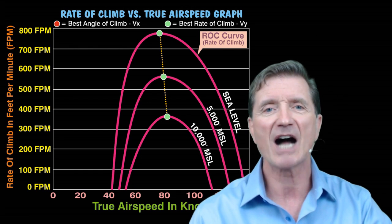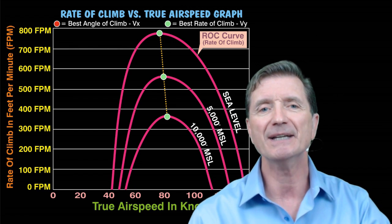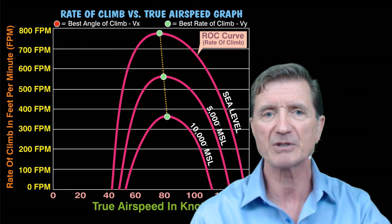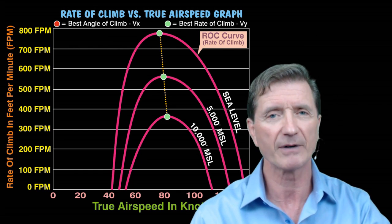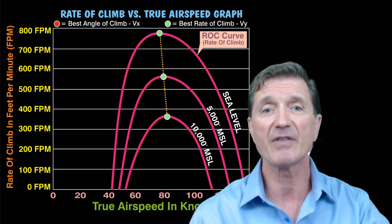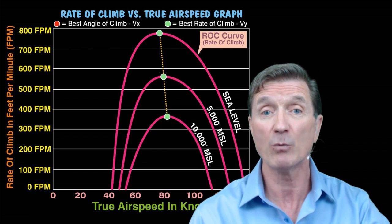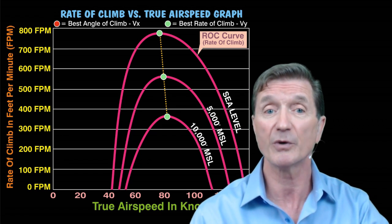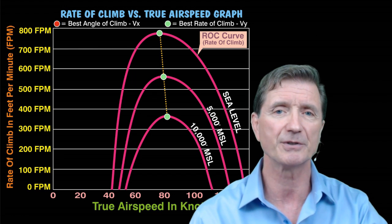Since the green dots represent the best rate of climb speed at three different altitudes, it's pretty clear that VY does indeed increase with an increase in altitude.